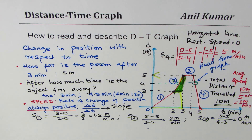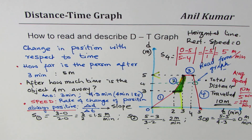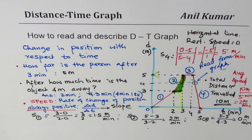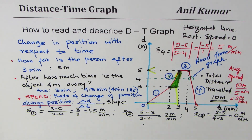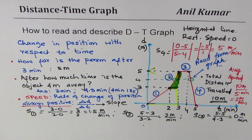We've understood how to sketch a distance-time graph, how to read it, and how to calculate values like speed, distance, average speed, and total distance. I hope you found it interesting. Feel free to post questions and subscribe to my videos. Thank you and all the best!